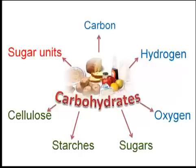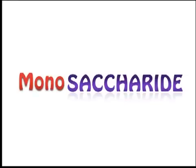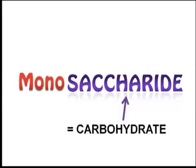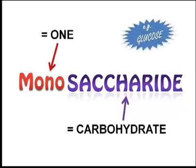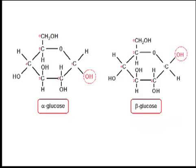I hear Mr Moore talking about monosaccharides a lot in class. What are they about? Basically, a carbohydrate whose molecules contain just one sugar unit is called a monosaccharide. A monosaccharide you've probably heard a lot about is glucose. It comes in two forms, alpha and beta. Exactly.